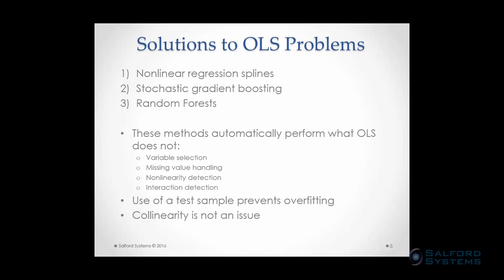The solutions we'll look at — nonlinear regression splines, stochastic gradient boosting, and random forests — automatically perform what OLS does not: variable selection, missing value handling, nonlinearity detection, and interaction detection. They use a test sample to prevent overfitting, and collinearity is not an issue with any of these data mining techniques. That said, these aren't the only solutions to OLS, and if your data can be fully explained by a simple global hyperplane, OLS could still be a good choice.